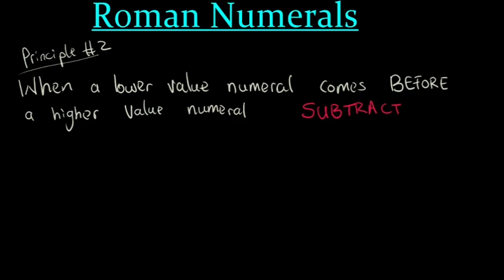The second principle states that when a lower value numeral comes before a higher value, we subtract. If we had IV, we know that I is 1 and V is 5, so we realize that a lower value comes before a higher value. So in this case, we would subtract. There will be 5 minus 1 to give us 4. So IV is equal to 4.